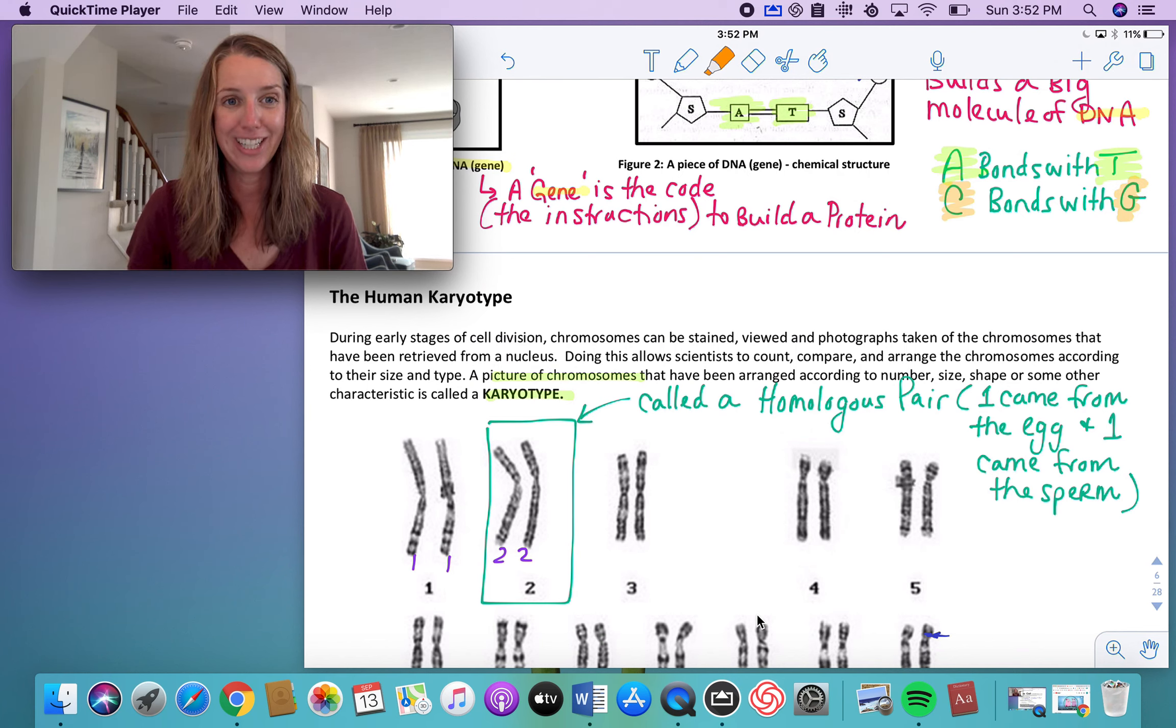We're now in part number two where we're going to look at the human karyotype. So now you've learned about the DNA structure. Now let's look at chromosomes again and see what they look like. Could you actually take a picture of a chromosome? You can. And so you can see down below in this diagram right here, we have something called a karyotype.